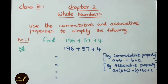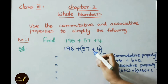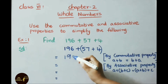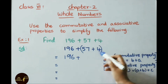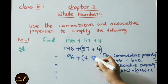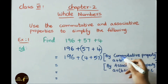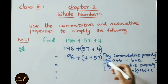We have to solve the sum using the commutative and associative properties. We take two numbers and apply the commutative property. A plus B can be written as B plus A, so 196 plus 57 plus 4 becomes 196 plus 4 plus 57. Commutative property applied: A plus B equals B plus A.